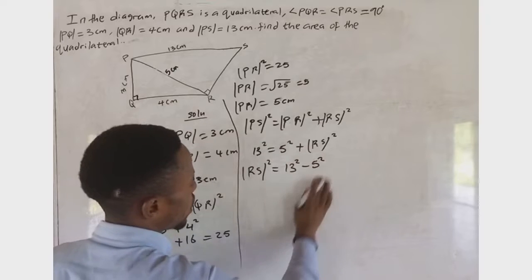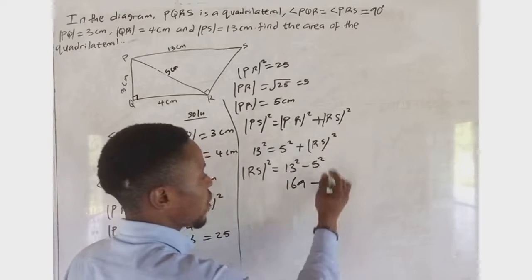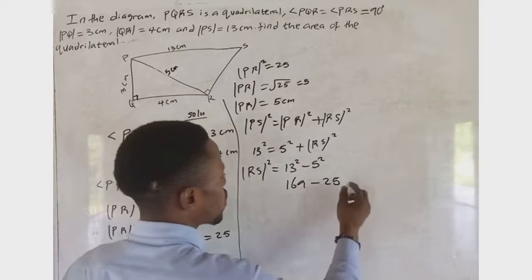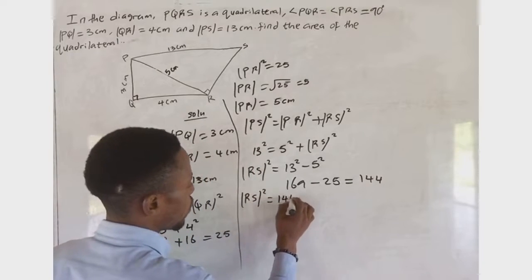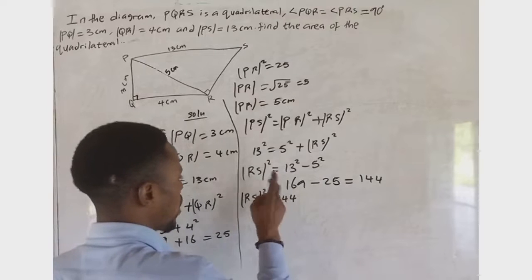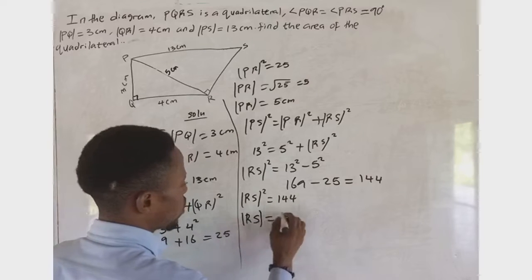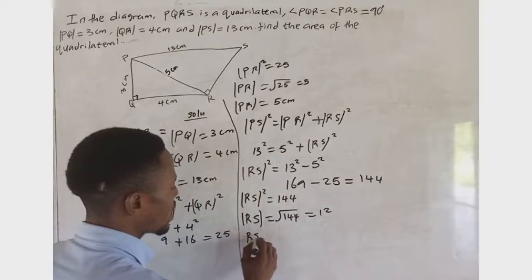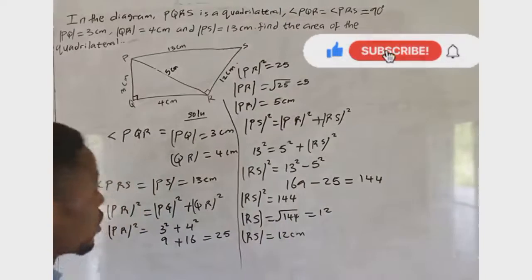So RS² = 13² − 5². 13² is 169, and 5² is 25. So RS² = 169 − 25 = 144.